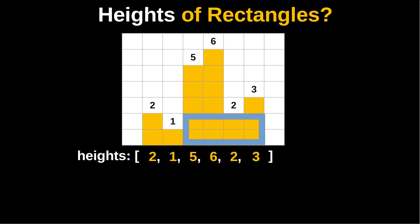Let's talk about the heights of these rectangles first. The height could be any of the values in the heights array — so it can have a height of 2, 1, 5, 6, 2, and 3. The values in the array define the subset of heights that's possible for all the rectangles if we are looking for the largest rectangle.